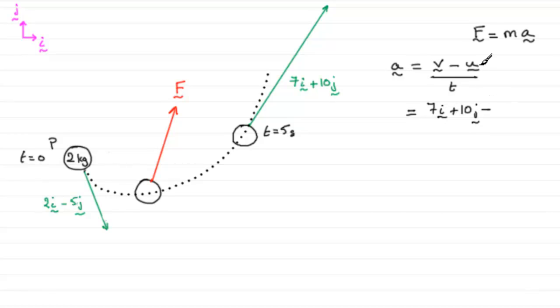But I do need to write this in brackets, minus U. U being 2i minus 5j. 2i minus 5j. And then, this is all divided by the time interval, which was 5 seconds.